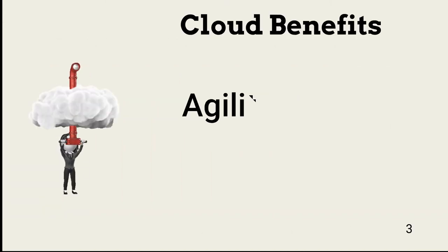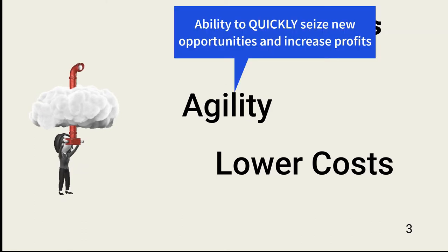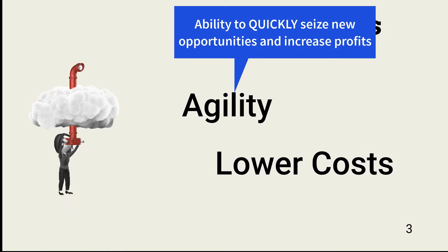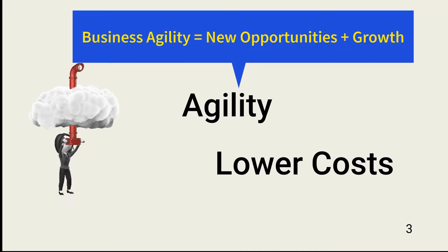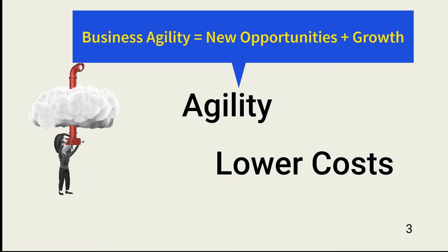There are two significant benefits associated with cloud use: agility and cost containment. Agility is the ability of an organization to respond to market and industry changes. It enables a business to quickly seize new opportunities and increase profits. In the ISC squared cloud immersion training, agility is represented by the formula: business agility equals new opportunities plus growth. Failure to make IT changes to meet frequent changes in market conditions, increasing interconnectedness of business entities and services, new laws, and political conditions will cause an organization to lose competitive advantage.